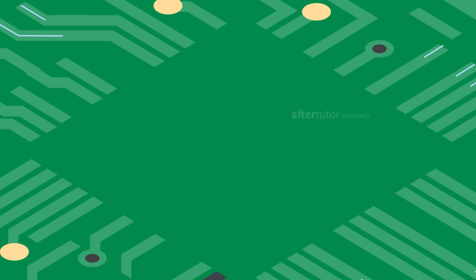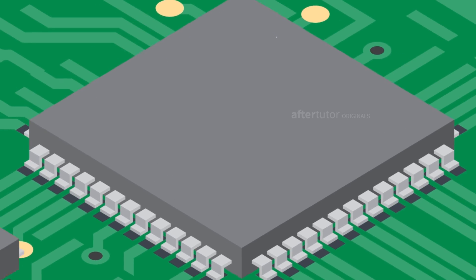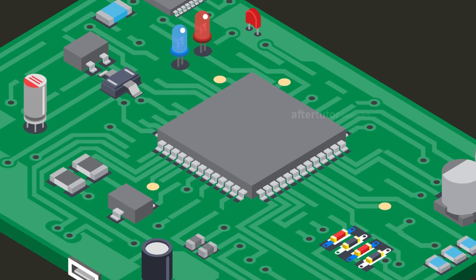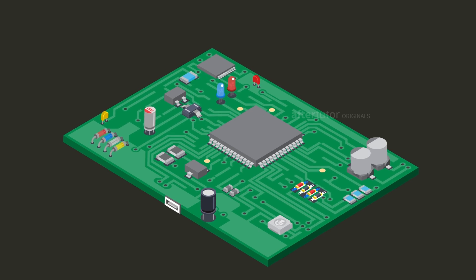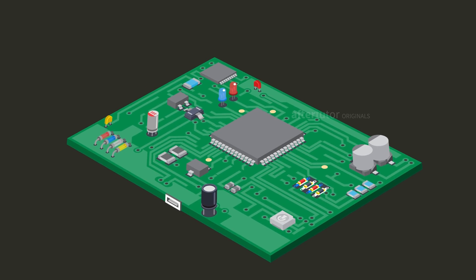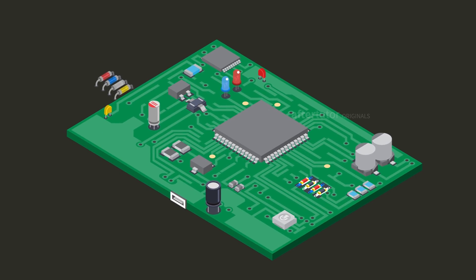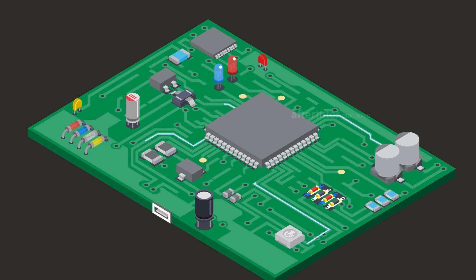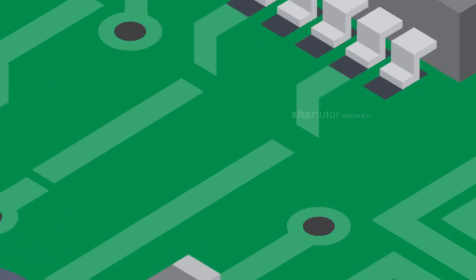A network and circuit analysis is nothing but the collection of all elements or components combined together to form a circuit or a combination of circuits. A circuit consists of basic components such as the resistors, capacitors, inductors, current source, voltage source, and so on.